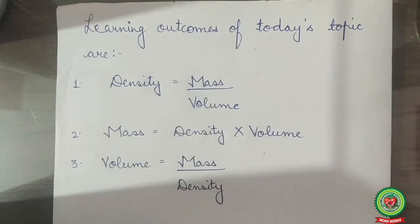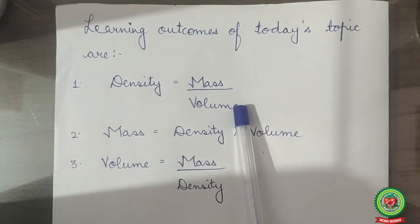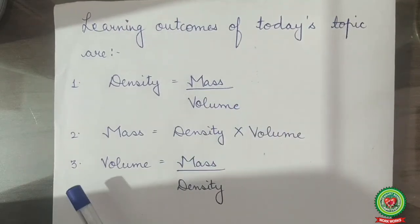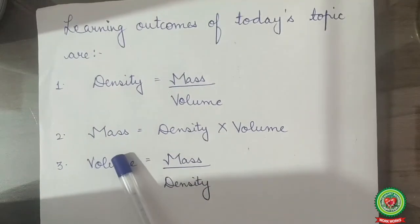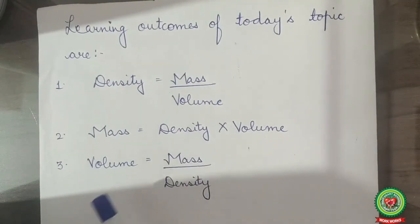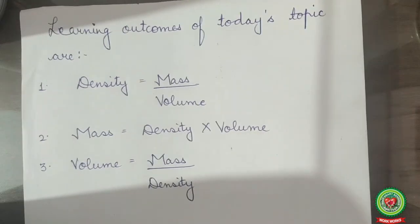Learning outcomes of today's topic are: first, to find density, we have formula density equals mass upon volume. Next to find mass, density multiplied by volume gives us mass. And third, to find volume, volume equals mass upon density.